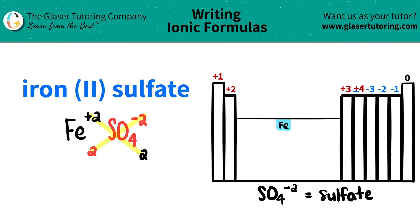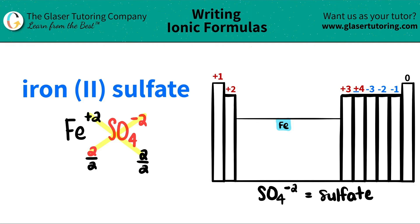We're only going to be focusing on the subscripts because that's how we write our formulas. But here's the trick: if you see that you have the same number and it's greater than one — like two and two, three and three, four and four — you have to simplify by division. Ionic compounds always need to be in their most simplified form. So in this case, I divide each one by two: two divided by two is one, and that's the number I'm going to use.